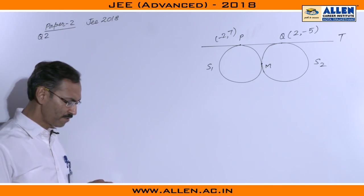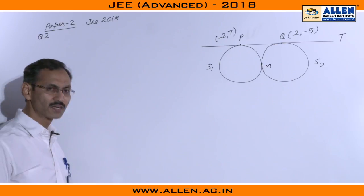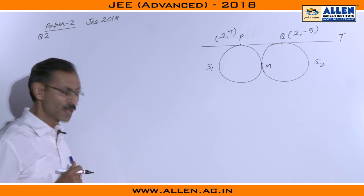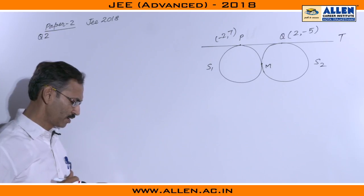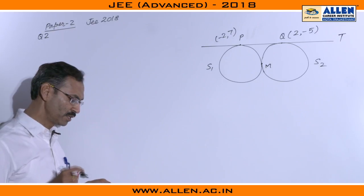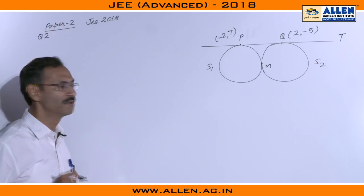They mentioned F1 and E1. F1 is set of all pair of circles. These are variable pair of circles and M is the point of contact and we have to find the locus of M as E1 is a set representing the locus of M as pair S1 comma S2 varies in F1.